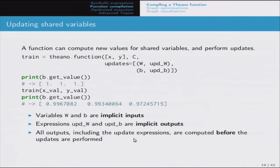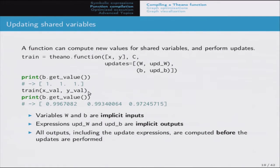To update shared variables for training, you can pass updates to Theano functions - a list of pairs of a shared variable and a symbolic expression computing its new value. Update_W and update_B are implicit outputs of the function computed at the same time as the cost, and after all outputs are computed, the updates take effect. If you print the value of B before and after calling the train function, the value has changed.